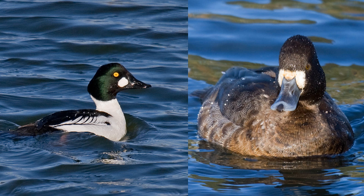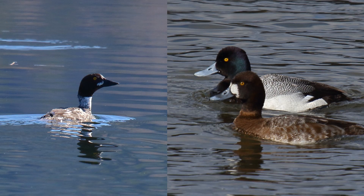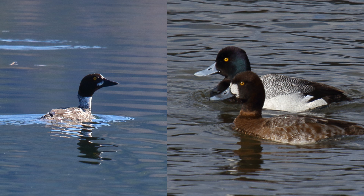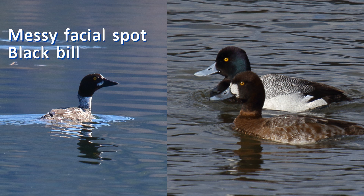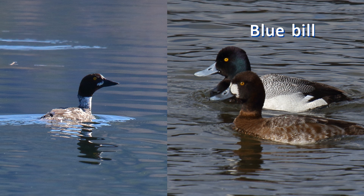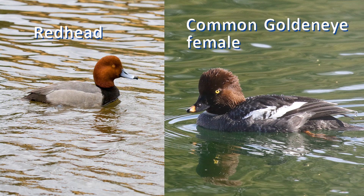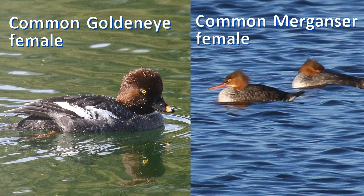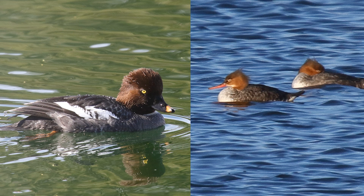The bill of the male goldeneyes is black. Compare now female lesser scaup with immature male common goldeneye. The immature male common goldeneye has a messy facial spot on a brown head. Note the blue bill on the scaup. You are not going to mistake the redhead with its blue bill with a female goldeneye, right? But at a distance or in fog or drizzle, they may appear similar at first.